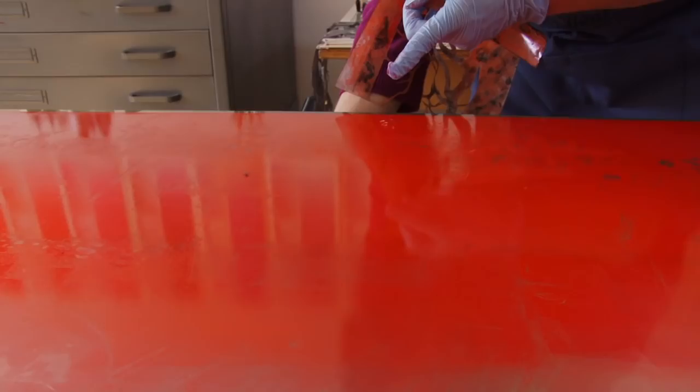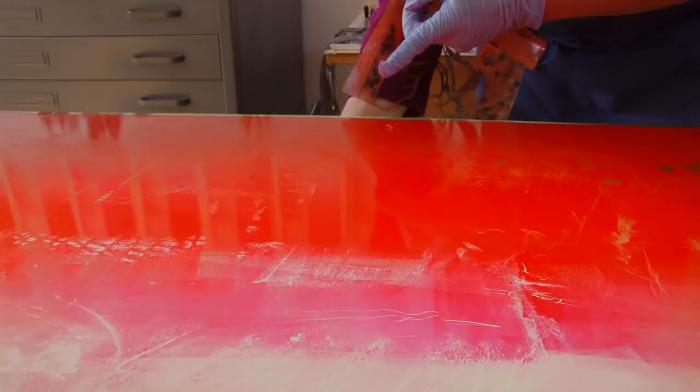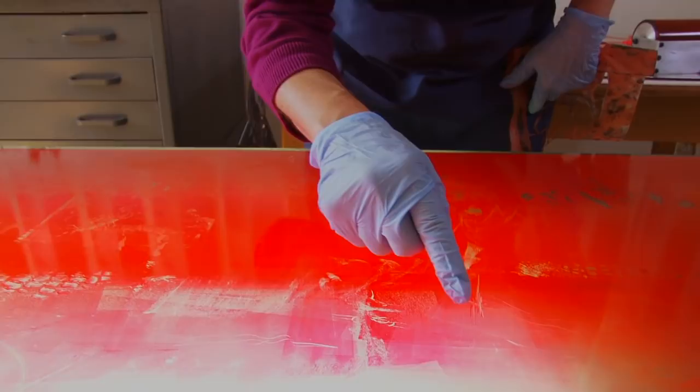With the light table, you get a truer picture of what actually is on the plate. When you're printing with an etching press, because you have so much pressure, all these fine little details will come through.